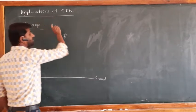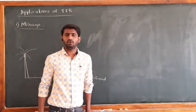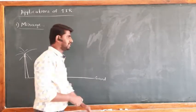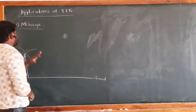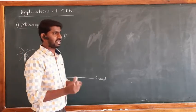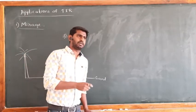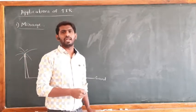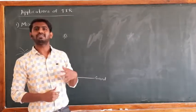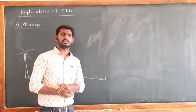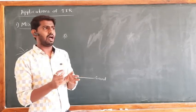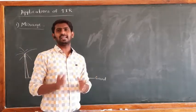Now, applications of total internal reflection. The first application is mirage. We can observe mirage on hot summer days, and it most commonly occurs in desert areas.